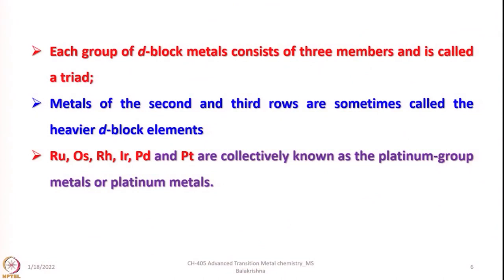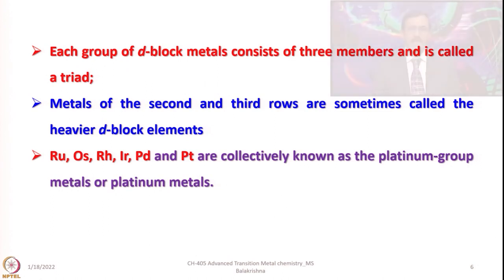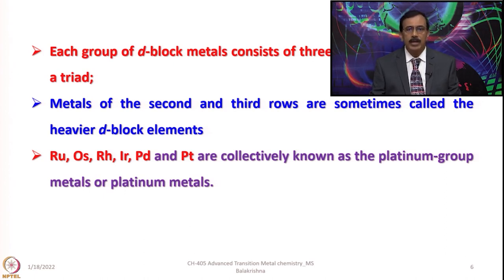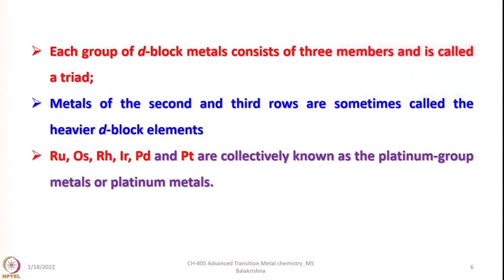For example, chromium, molybdenum, and tungsten; or nickel, palladium, and platinum; or copper, silver, and gold; or cobalt, rhodium, and iridium — each set is called a triad. Metals of the second and third row are sometimes called the heavier D block elements. The chemistry of 3D elements differs considerably from the 4D and 5D series, whereas 4D and 5D have a lot of resemblance and almost very similar properties.